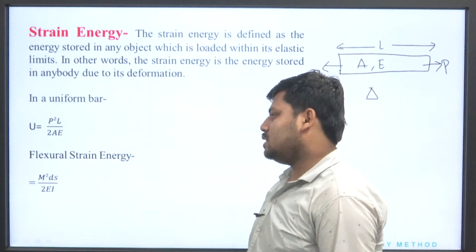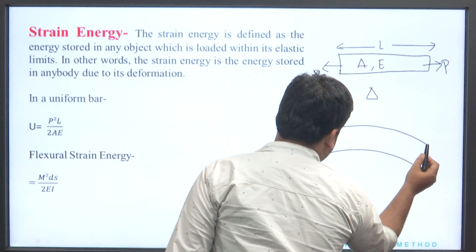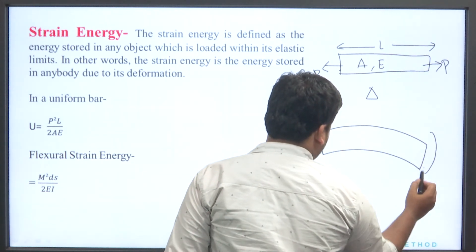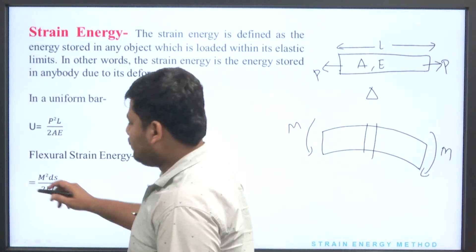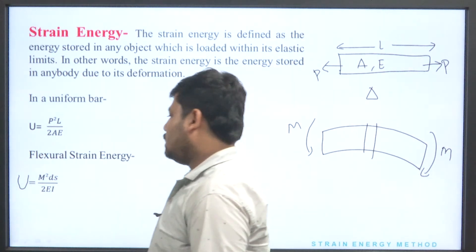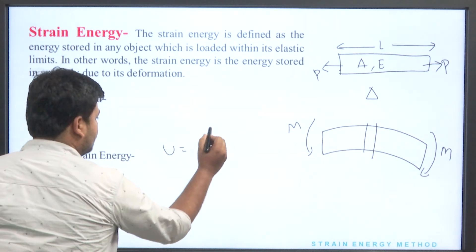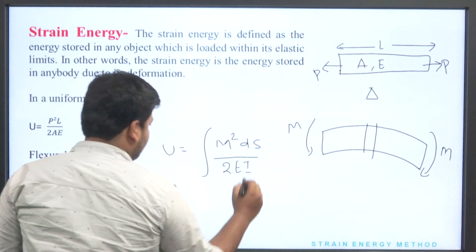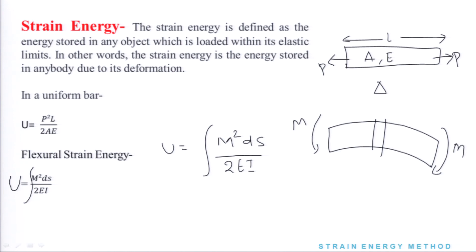In terms of flexural strain energy, in terms of moment, we consider a simple element — this is a bar which is going through bending. Bending occurs with a moment of M, over a small section dx. If we talk about total flexural strain energy, it will become U = ∫M²dx / 2EI, where M is the moment, dx is the small element, E is the elastic modulus, and I is the moment of inertia of the section.